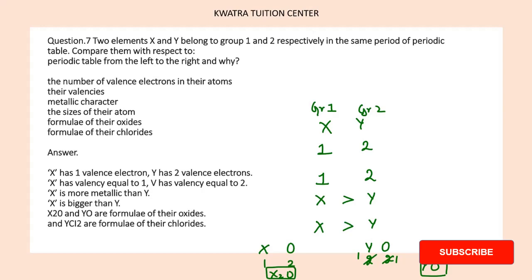Next we have the formula of their chlorides. So we know that X with chlorine: X is 1, chlorine is 1, so XCl. And Y with chlorine: Y is 2, chlorine is 1, so it will be YCl2. So yes, this is the answer.